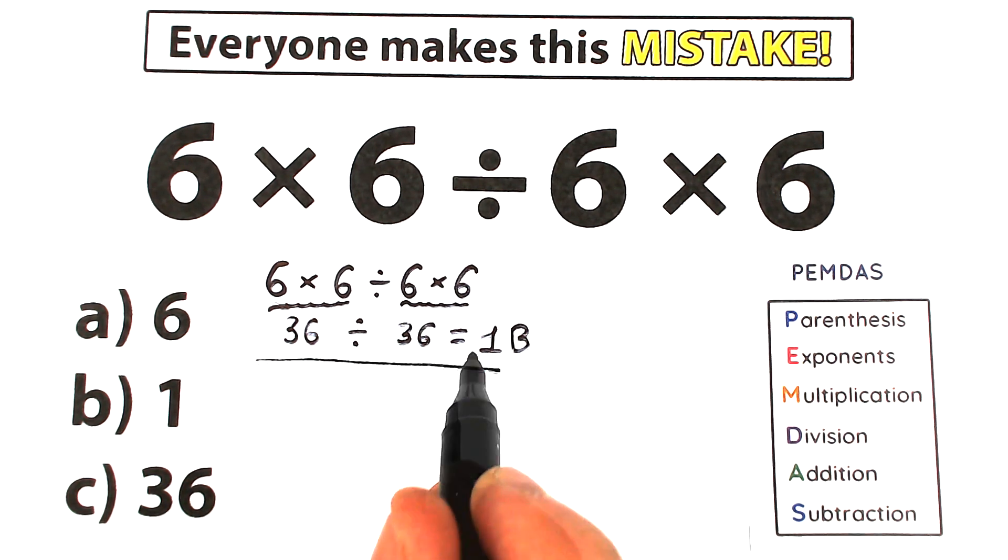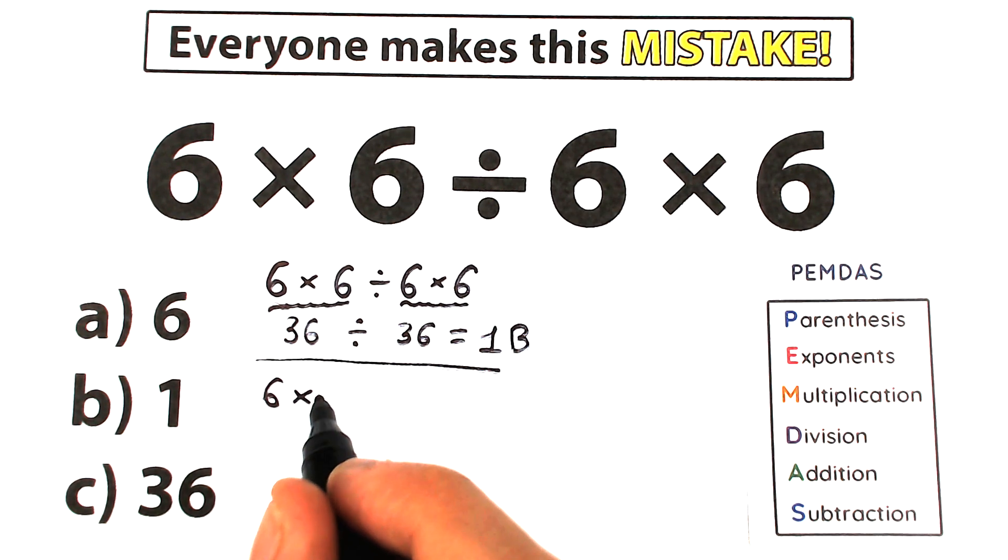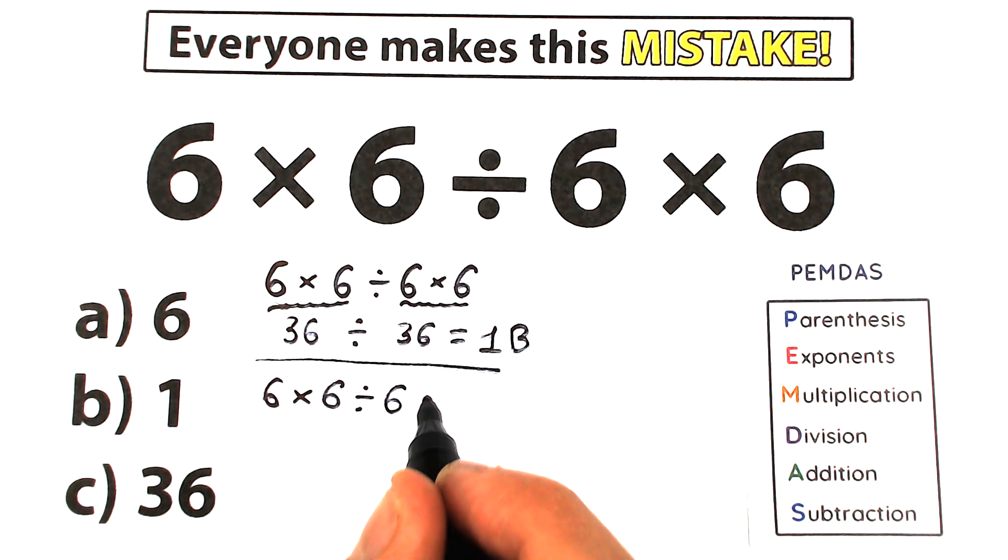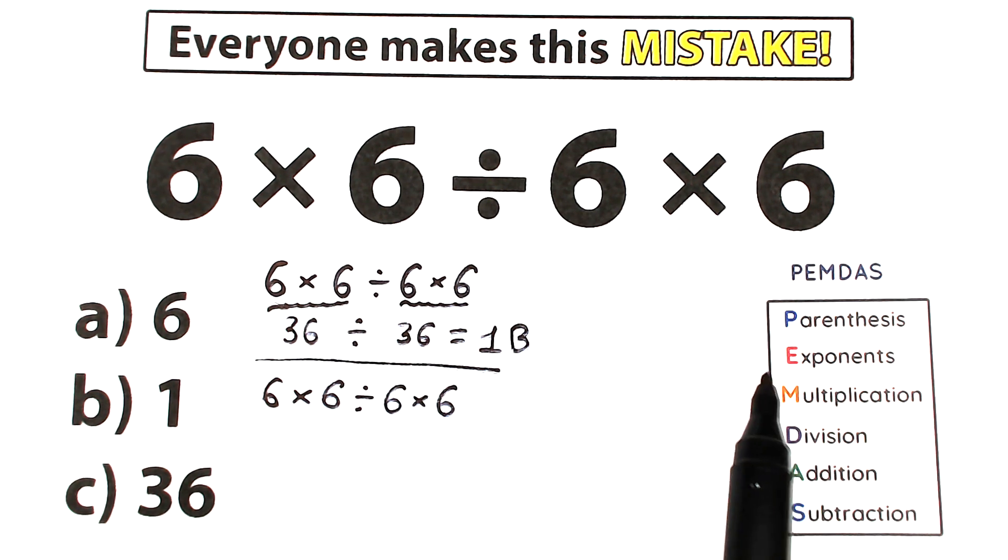So I wanted to leave this part right here, and right now let's rewrite once more. So we have 6 times 6 divided by 6 and times 6. Here's our challenge. Right now, how does PEMDAS work?